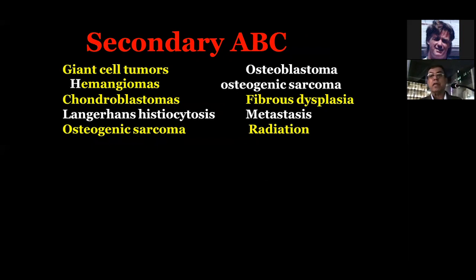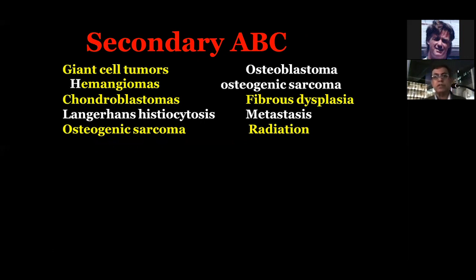Secondary ABC — and we agreed it is a misnomer — arises from pre-existing tumors such as giant cell tumors, hemangioma, chondroblastoma, Langerhans cell histiocytosis, et cetera. There is a pre-existing lesion, and then the ABC develops inside that lesion.